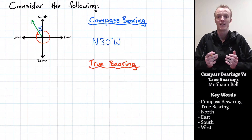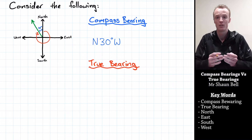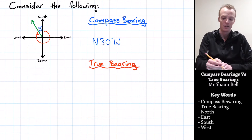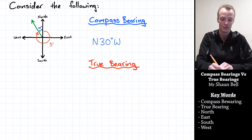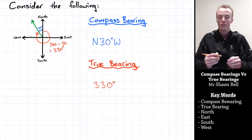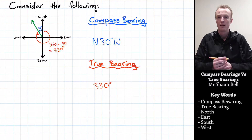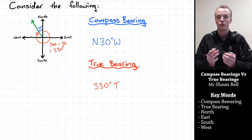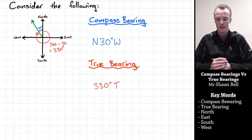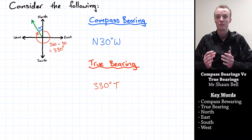We want to find how many degrees it is from the North bar in a clockwise direction. We know that the whole circle is 360 degrees, so the angle indicated should be 360 degrees minus 30 degrees, which equals 330 degrees. So our true bearing is 330 degrees from this North bar. We also indicate that it is a true bearing with a capital T afterwards, giving us 330 degrees true.